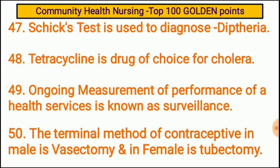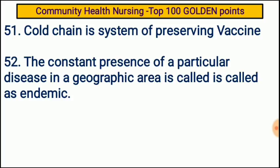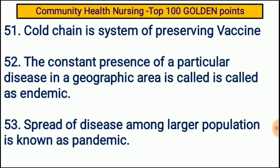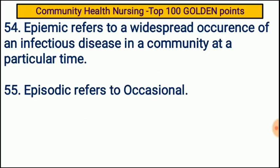The terminal method of contraception in male is vasectomy and in female is tubectomy. Cold chain is a system of preserving vaccines. The constant presence of a particular disease in a geographic area is called endemic. Spread of disease among a larger population is known as pandemic. Epidemic refers to widespread occurrence of an infectious disease in a community at a particular time. Episodic refers to occasional occurrence.